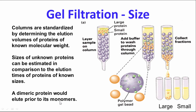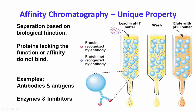Affinity chromatography is based on the biological function or activity of a protein or enzyme. Proteins lacking the function or affinity do not bind. Examples include antibodies and antigens — a column with an antibody bound to it will capture the recognized protein while others flow through. You can disrupt the antibody-antigen complex by changing conditions, usually pH 3 with dilute HCl, and then elute your protein. You can also put enzyme inhibitors onto beads — for example, a trypsin inhibitor that binds trypsin, which is then eluted at pH 3.